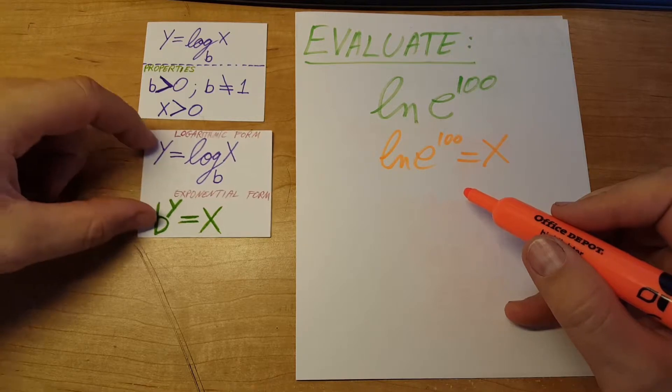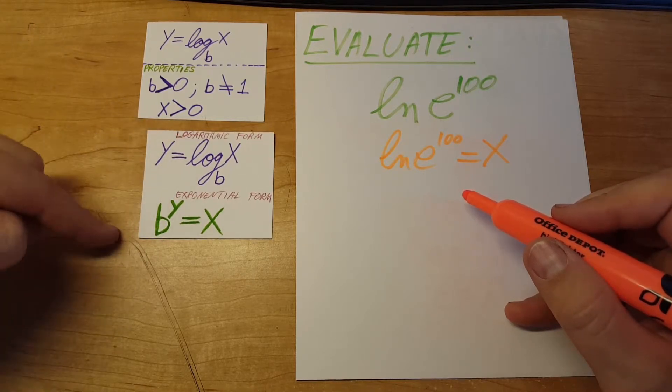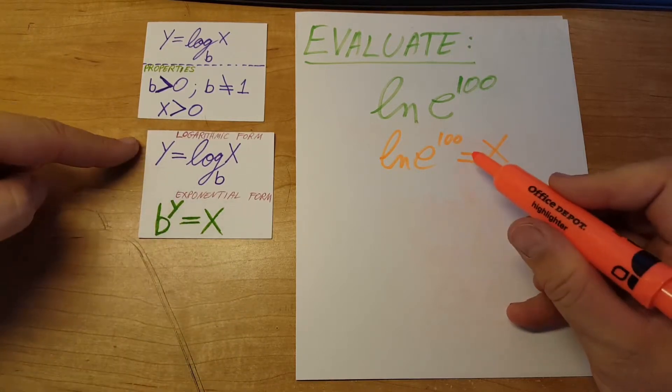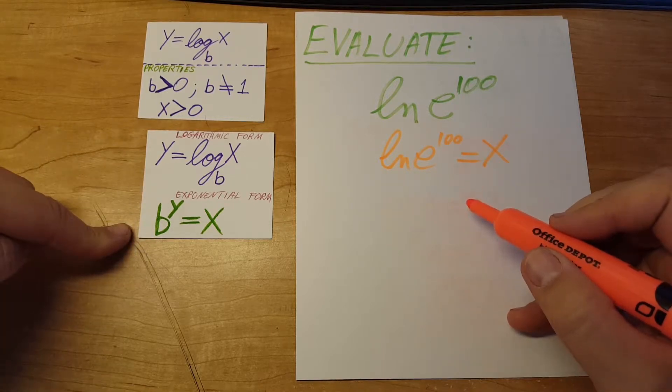to switch from one form to the other. We are in logarithmic form and we're going to switch to exponential form.